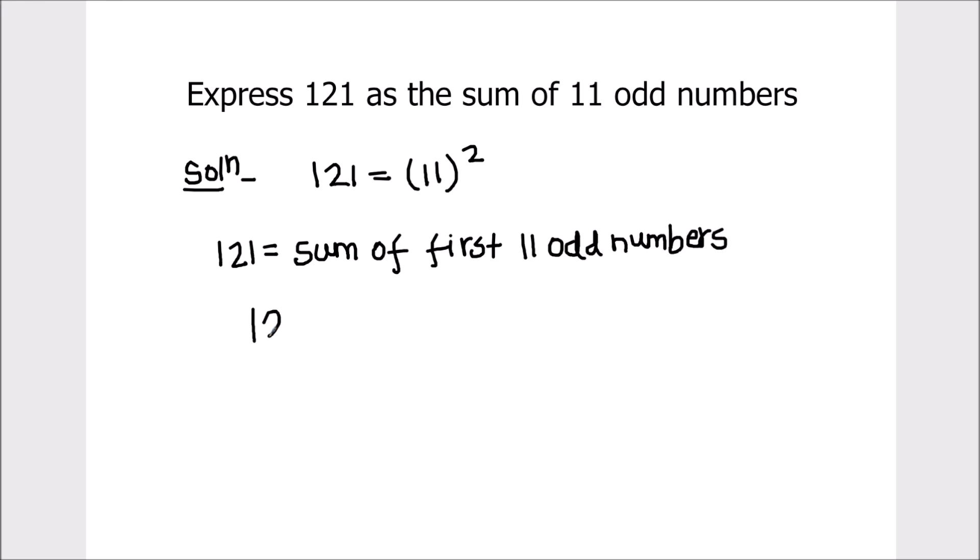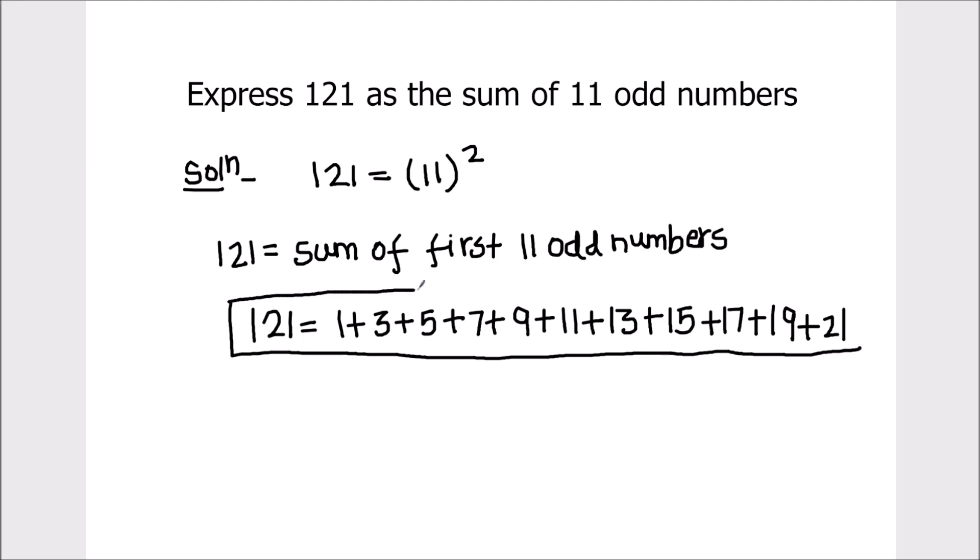So 121 equals 1 plus 3 plus 5 plus 7 plus 9 plus 11 plus 13 plus 15 plus 17 plus 19 plus 21. So the sum of all these first 11 odd numbers will be equal to 121.